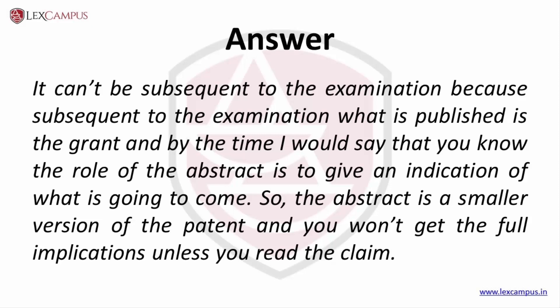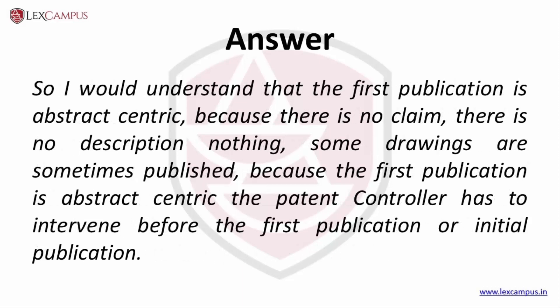By that time, the role of an abstract is to give an indication of what is going to come. The abstract is a smaller version of the patent and you won't get the full implication unless you read the claim. The first publication is abstract-centric — there's no claim, no description, nothing. Some drawings are sometimes published. So the patent controller has to intervene before the first publication or the initial publication.